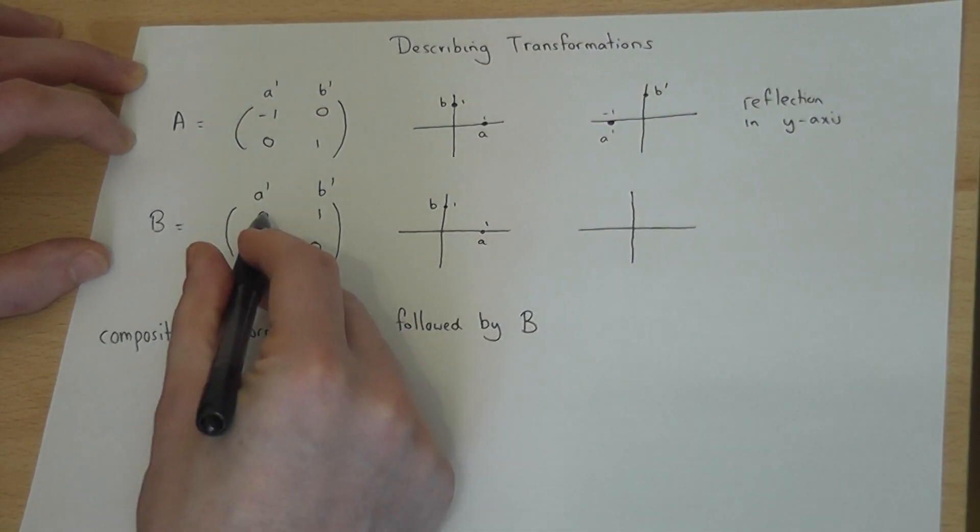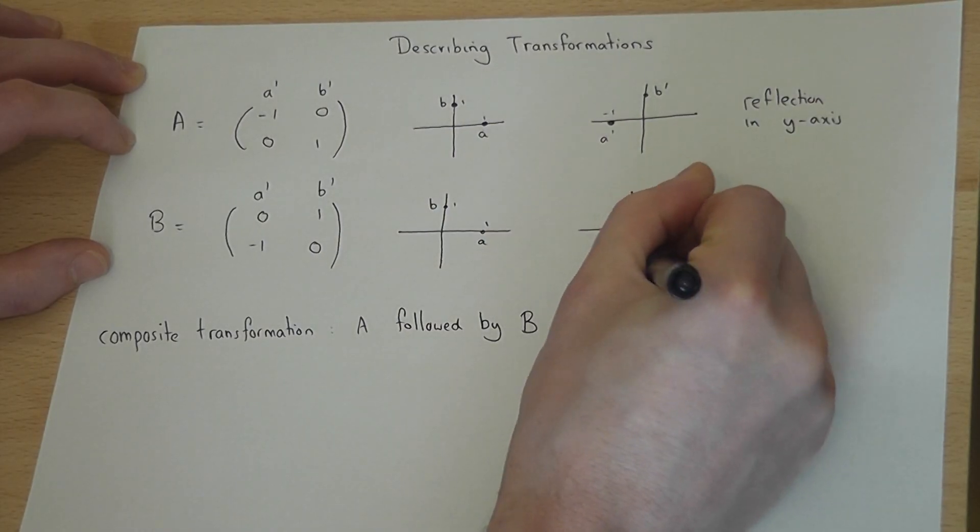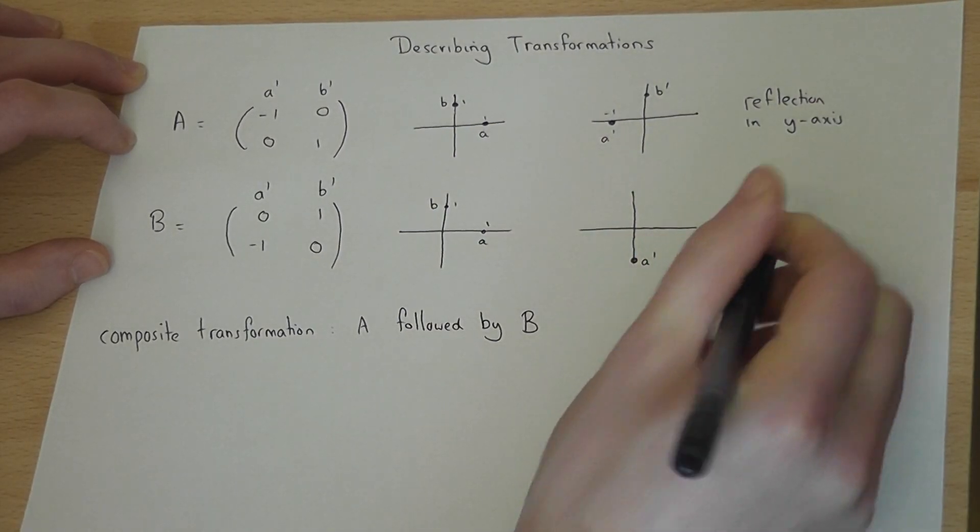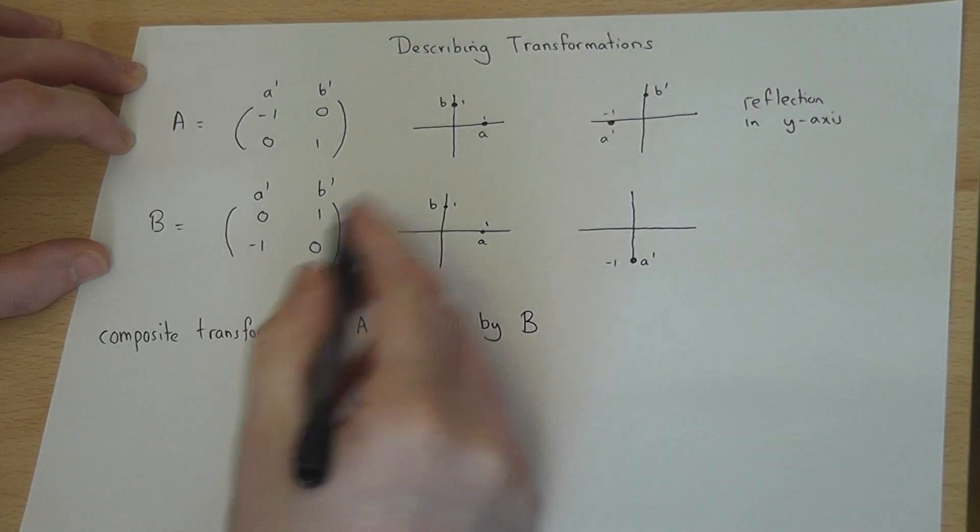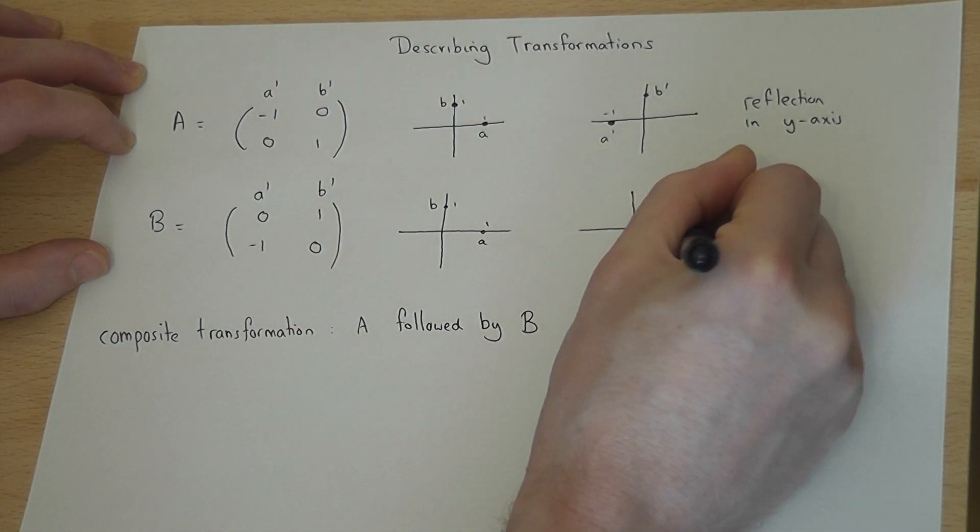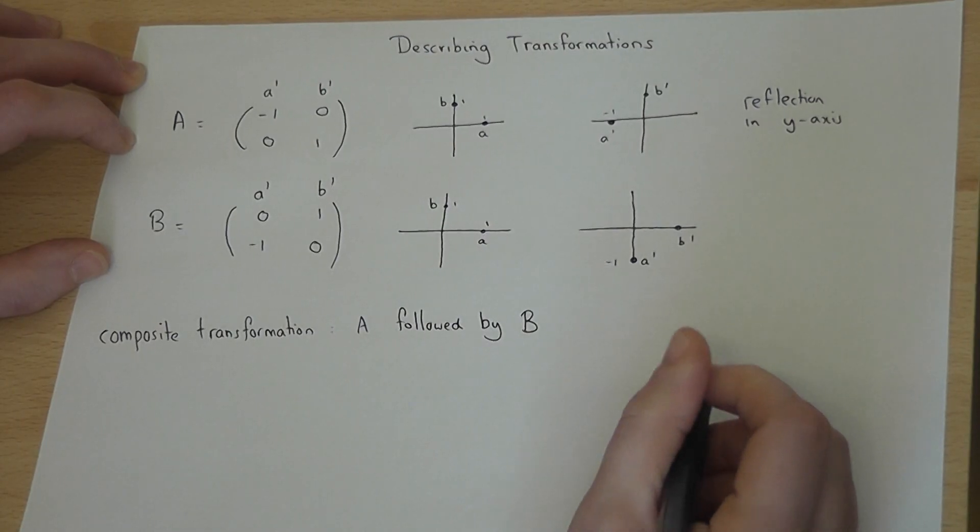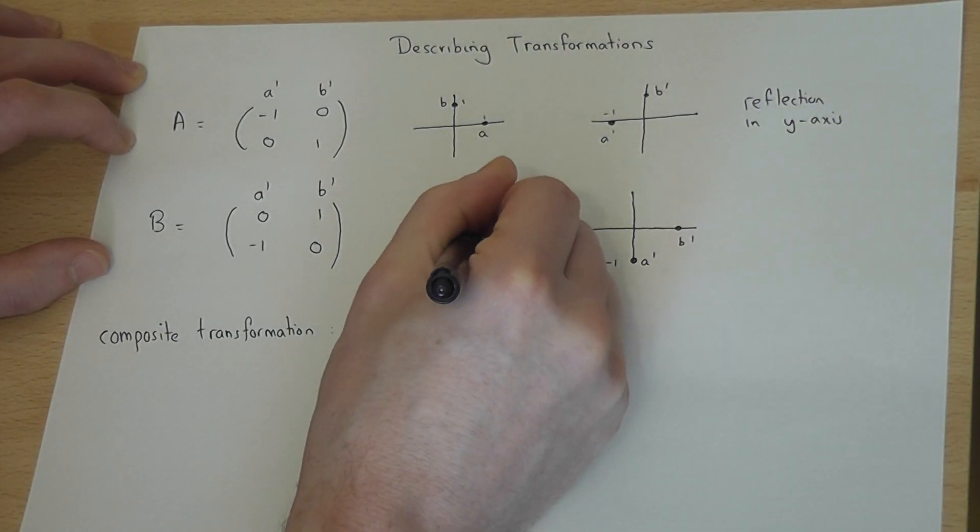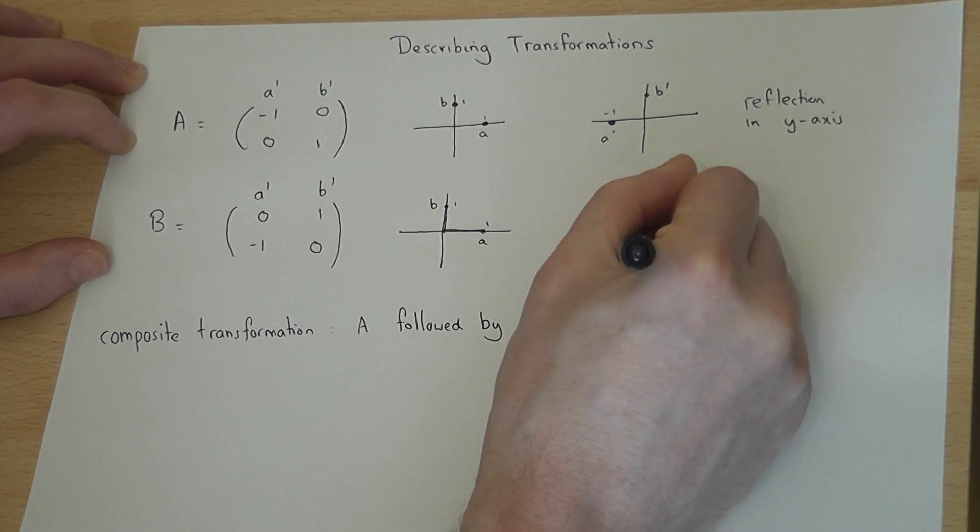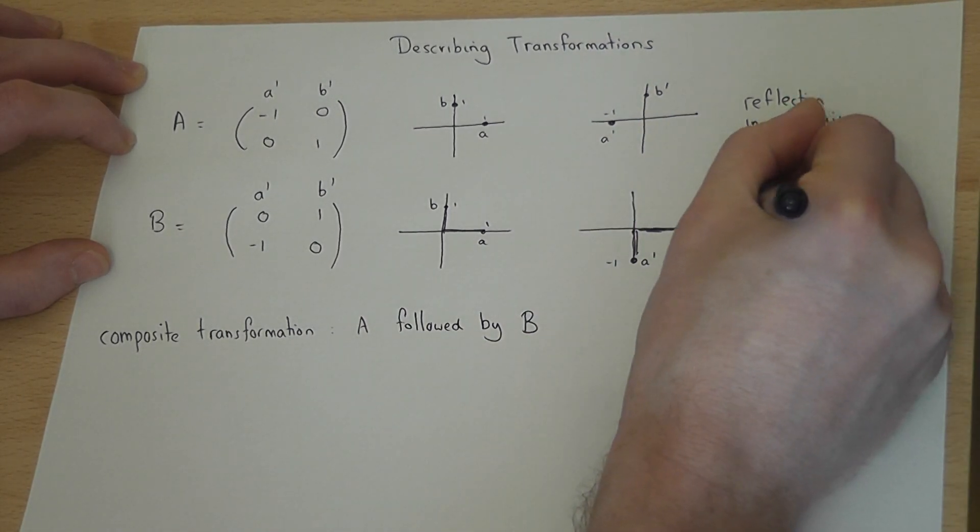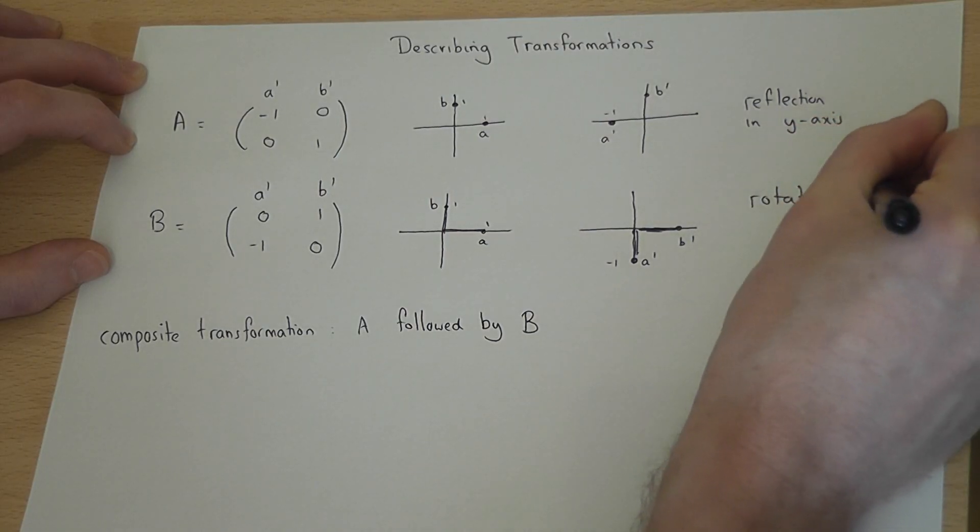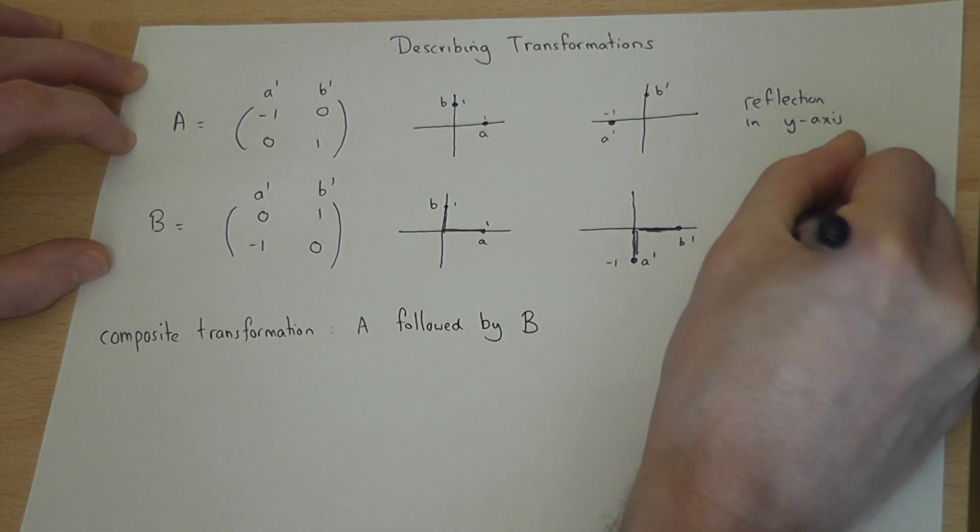So A has gone to 0, minus 1, which is down here. And B has gone to 1, 0, which is across here. So what you can see is this L shape has basically rotated round by 90 degrees. So we have a rotation of 90 degrees, and it's clockwise.